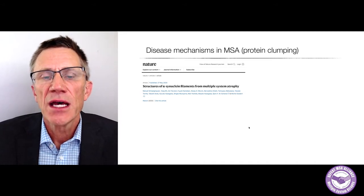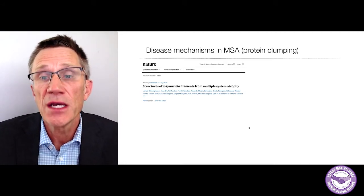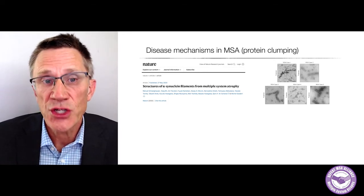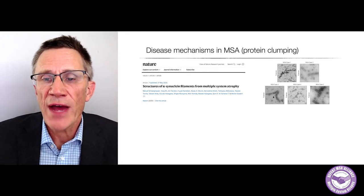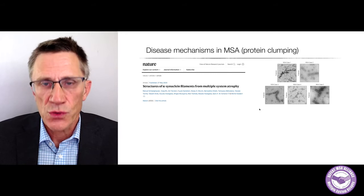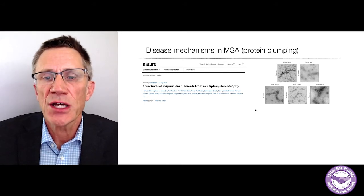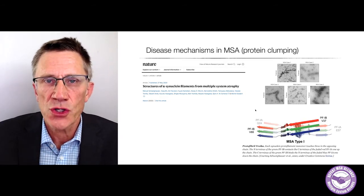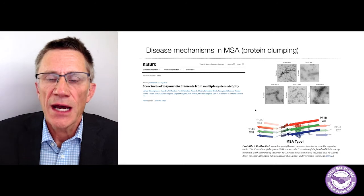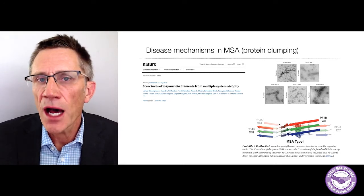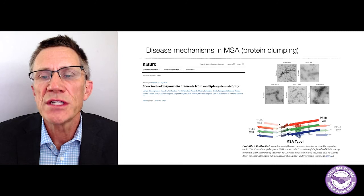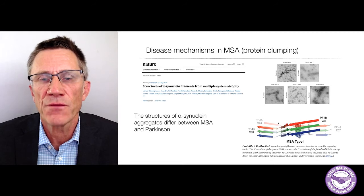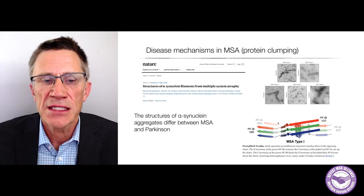Just recently, a study used electron microscopy to study aggregates from MSA brains. Published in Nature this summer, they saw lots of aggregates in a normal electron microscope, as expected. But with a method called cryoelectron microscopy, they could use the highest level of resolution and identify that MSA-type aggregates were different from those in Parkinson's.